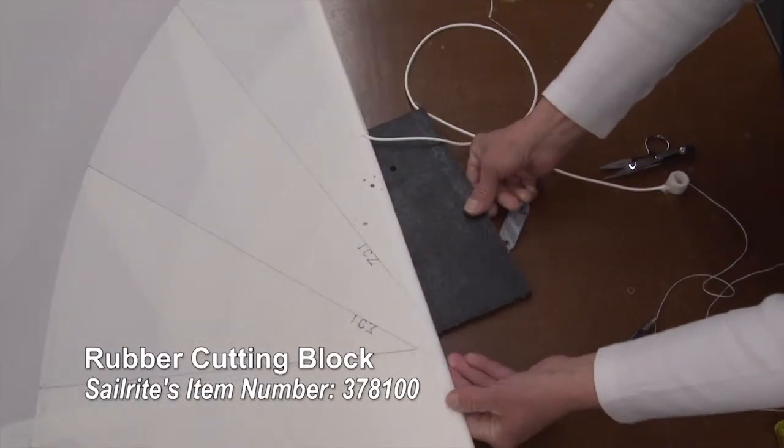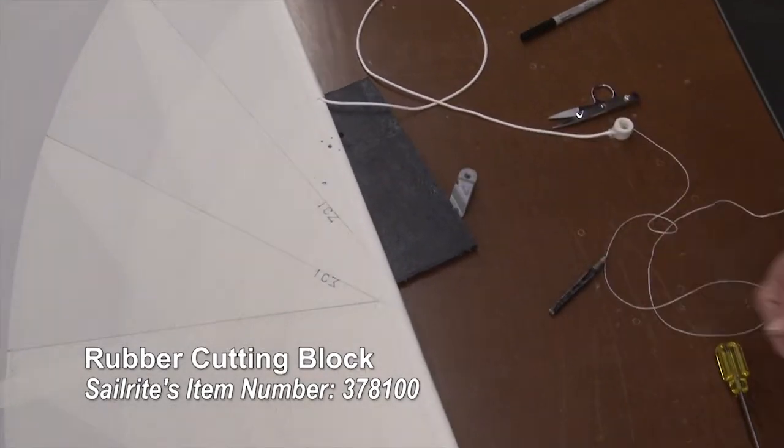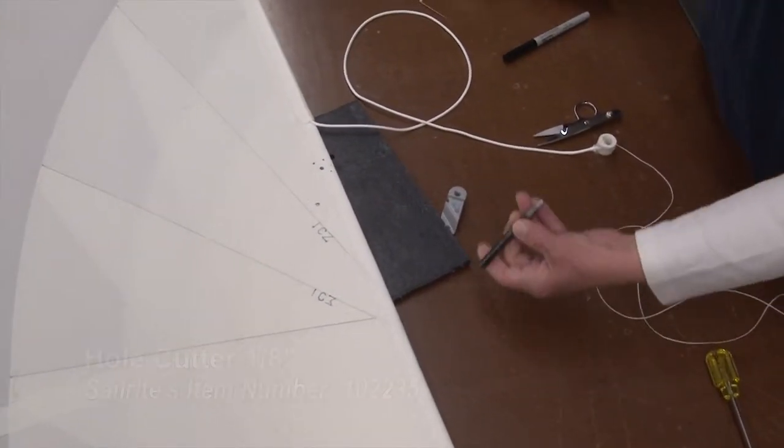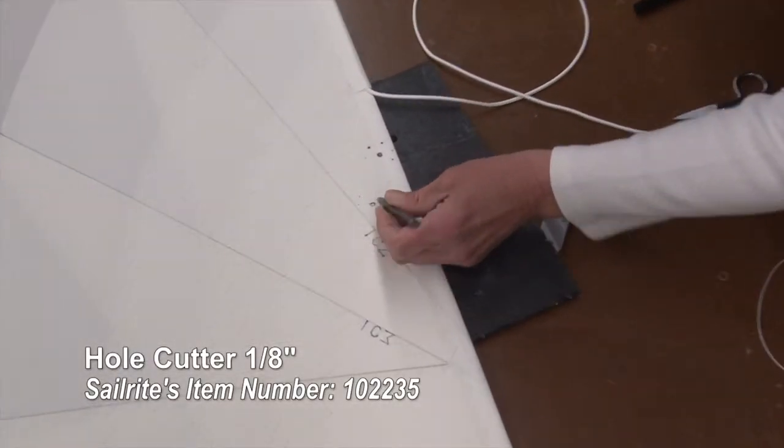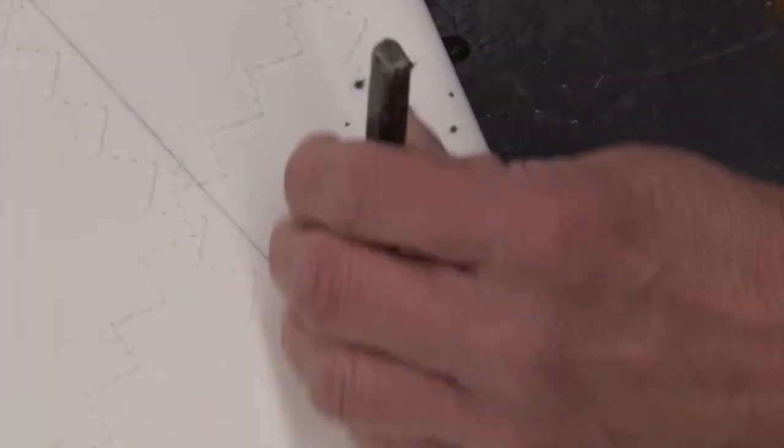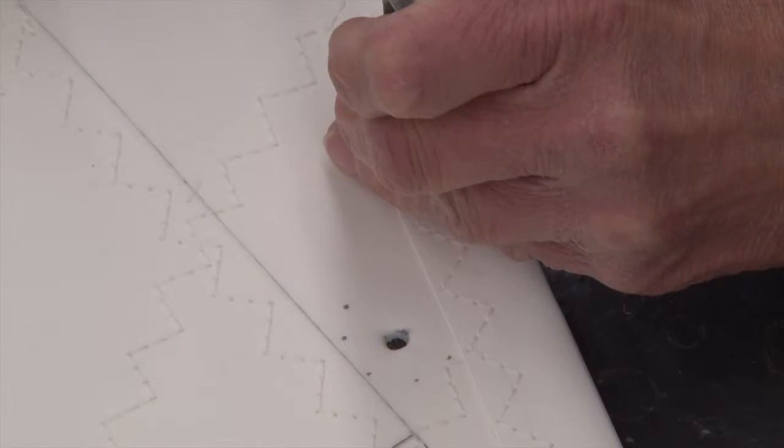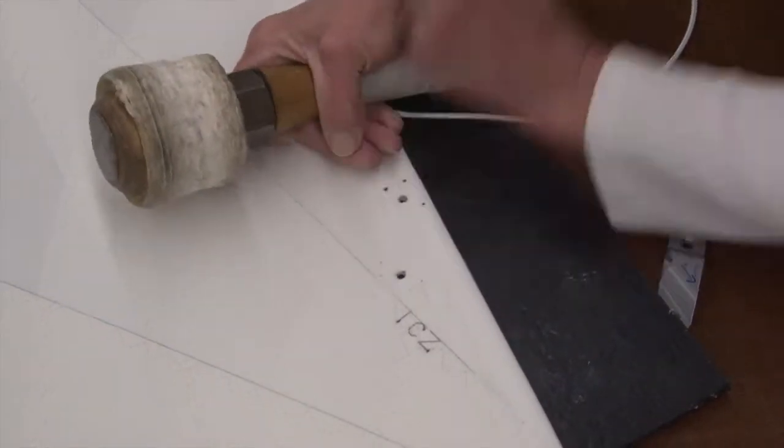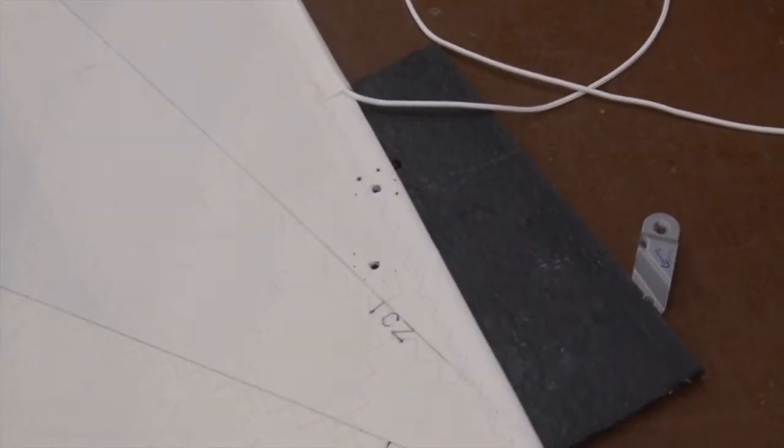We'll put the rubber cutting block on the back side to prevent damage to the one-eighth inch hole cutter that we're going to use now. We're using a heavy mallet with this hole cutter. You can use a dead blow hammer as well. A standard hammer will take several punches before you punch through the fabric.